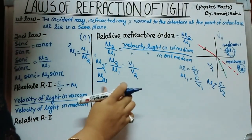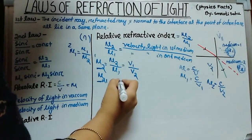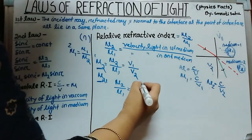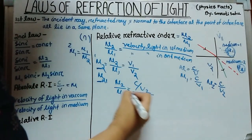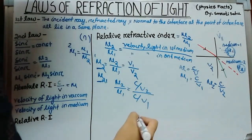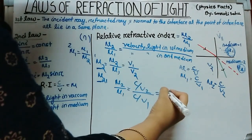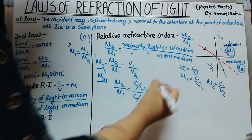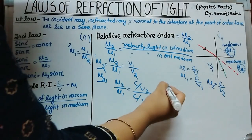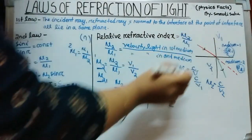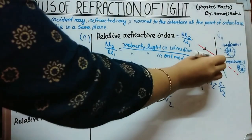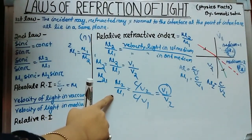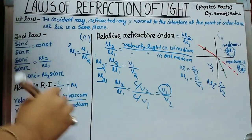Now put the values: mu2 by mu1 equals (C/v2) divided by (C/v1). The C cancels, giving v1 by v2. So mu2 by mu1 equals v1 by v2, where v1 is the velocity of light in the first medium and v2 is the velocity of light in the second medium.